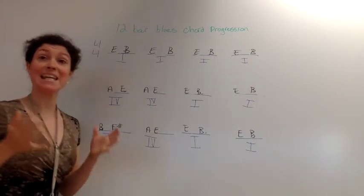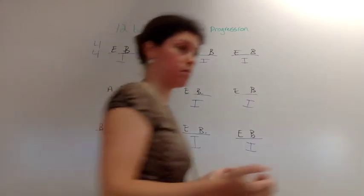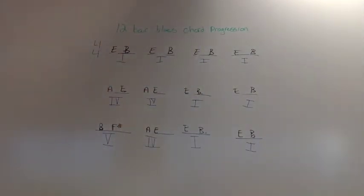So, here's how it sounds. Remember our scale. Now, your chord progression. You've got four bars of the 1 chord, so E and B.